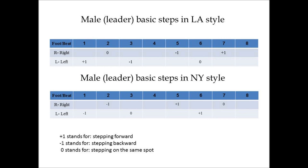In these two tables, we present the basic steps in both L.A. and New York style. This is only the basic steps, but in each row you can see the movement of the right leg and the left leg. Plus one stands for stepping forward, minus one stands for stepping backward, and zero stands for stepping on the same spot. For example, the male, or the leader, begins in the L.A. style with his left foot forward. At the second beat, he steps with his right leg on the same spot, and in the third beat he takes his left foot forward. Nothing occurs at the fourth and the eighth beat — there is no movement there.